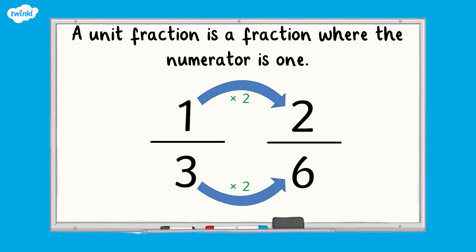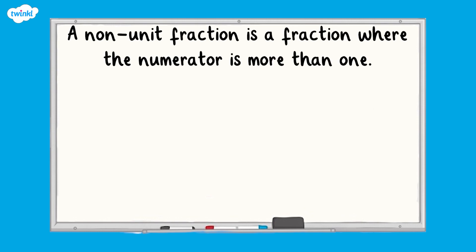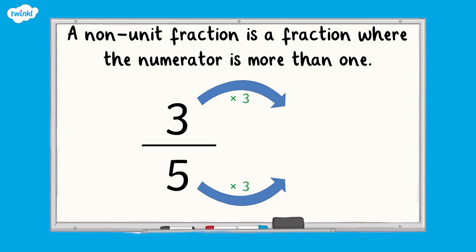We would say that one third is therefore equivalent to two sixths. This also works for non-unit fractions. A non-unit fraction is a fraction where the numerator is more than one. For example, if I wanted to find an equivalent fraction to the non-unit fraction three fifths, I could multiply the numerator and the denominator by the same number. In this example I have multiplied both by 3 to give the equivalent fraction nine fifteenths. We would say that three fifths is therefore equivalent to nine fifteenths.